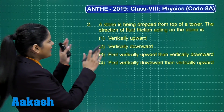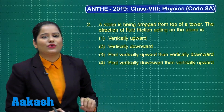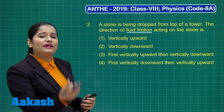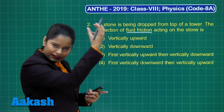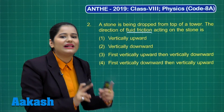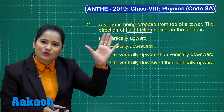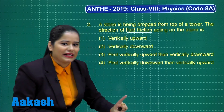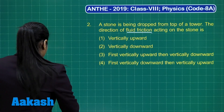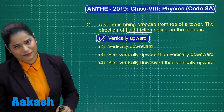The second question says: a stone is being dropped from the top of a tower; the direction of fluid friction acting on the stone is — ? When the stone is dropped, it moves downward due to its weight and experiences air resistance, which is fluid friction. Air resistance acts in the opposite direction to the motion of the stone, so since the stone moves downward, air resistance acts vertically upward. The correct answer is option one: vertically upward.